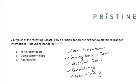Materiality means that the financial statements should be free from misstatements or omissions that could influence the decisions of users of financial statements. These are the five principles for preparing financial statements.